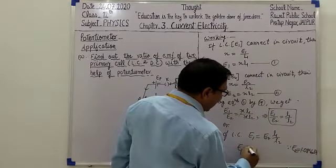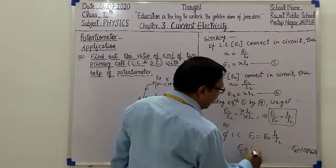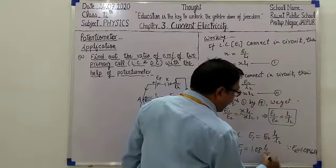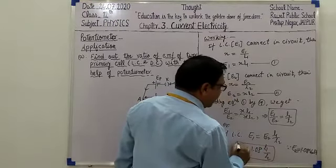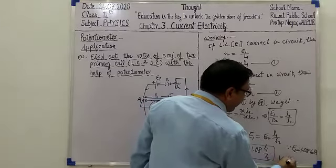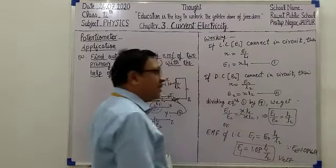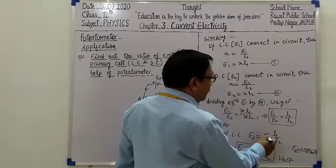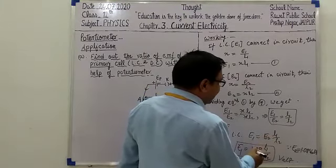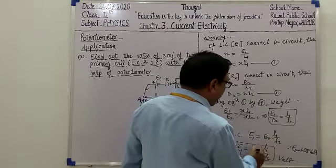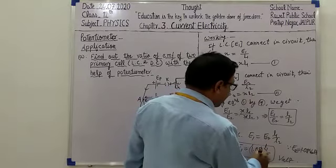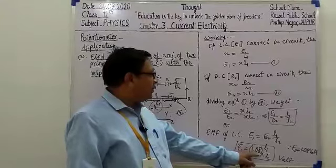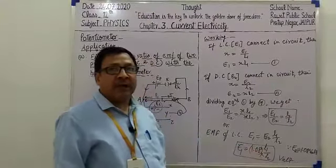Daniel cell is also called the standard cell because its EMF is constant: E2 = 1.08 volt. So, EMF of Leclanché cell E1 = 1.08 × L1/L2. The unit is volt because L1/L2 is a ratio, and the unit of E2 (EMF of Daniel cell) is also volt. Therefore, E1 = 1.08 × L1/L2.